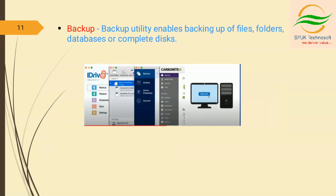The first utility is backup. The backup utility enables backing up of files, folders, database, or complete disks. It is a process of storing a copy of data in another storage device so that it can be recovered and restored in case of damage or loss of the original data files. Data loss is very common and has caused serious problems for many organizations and individuals. Hence it is essential to have regular data backups from time to time.